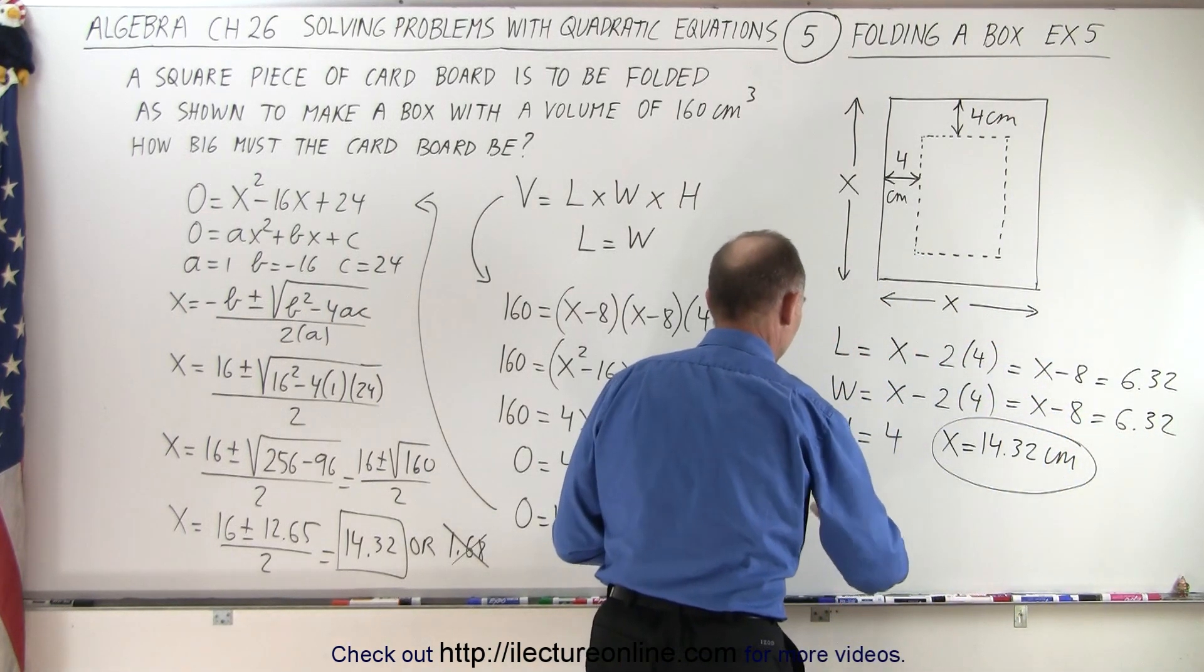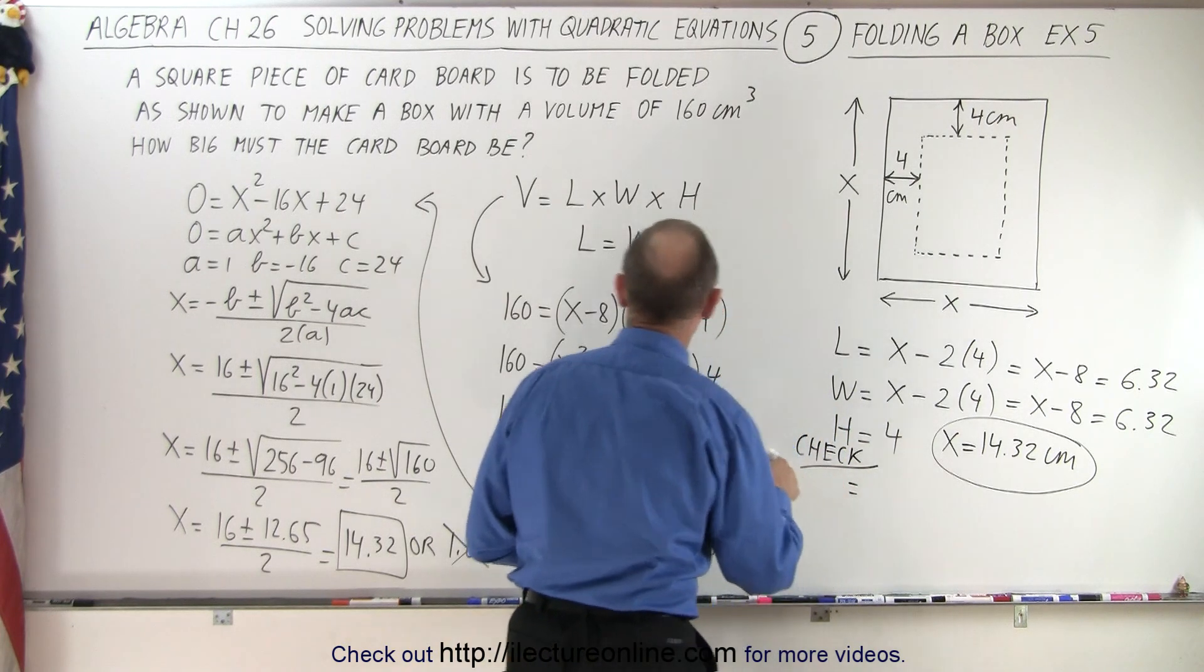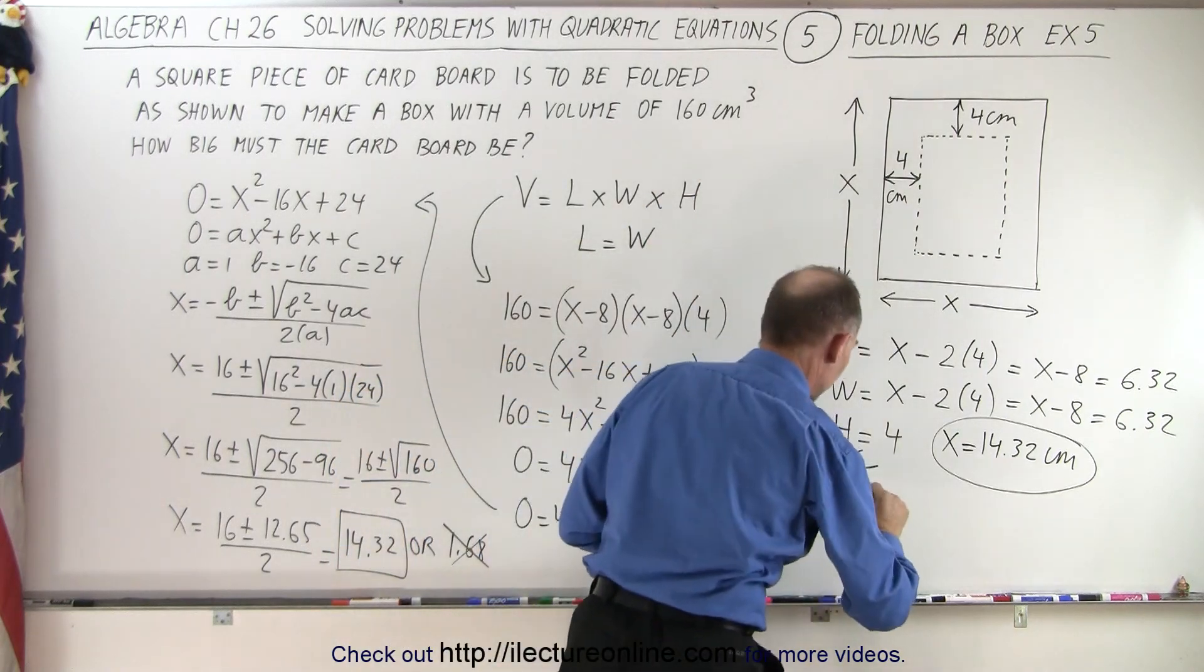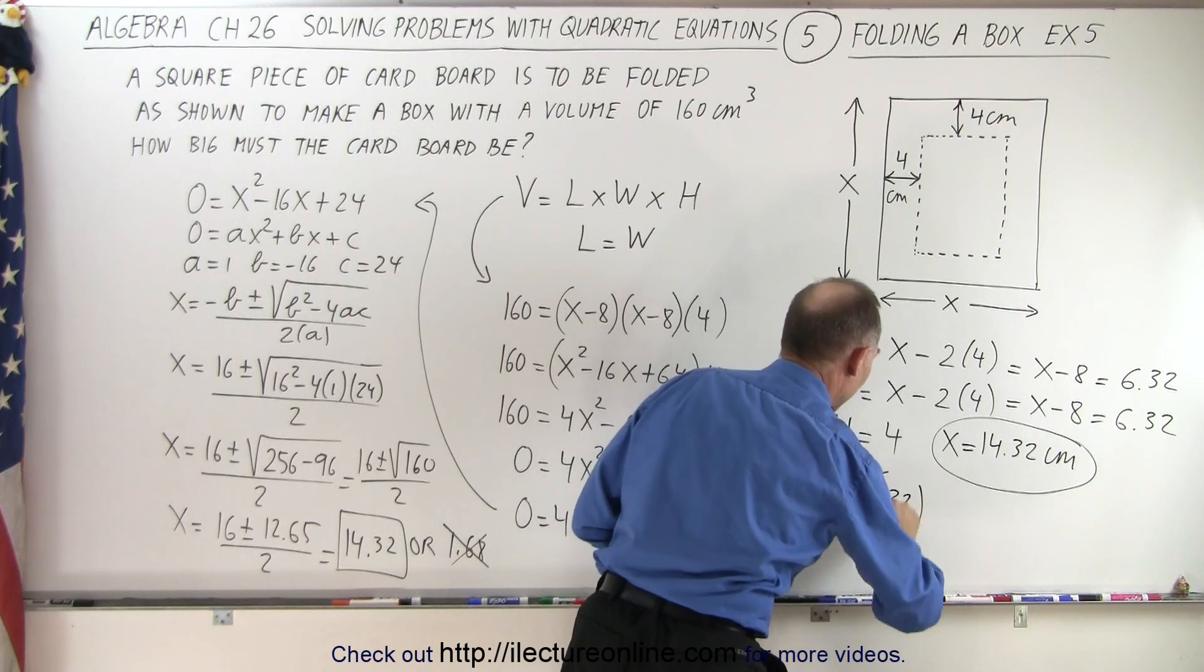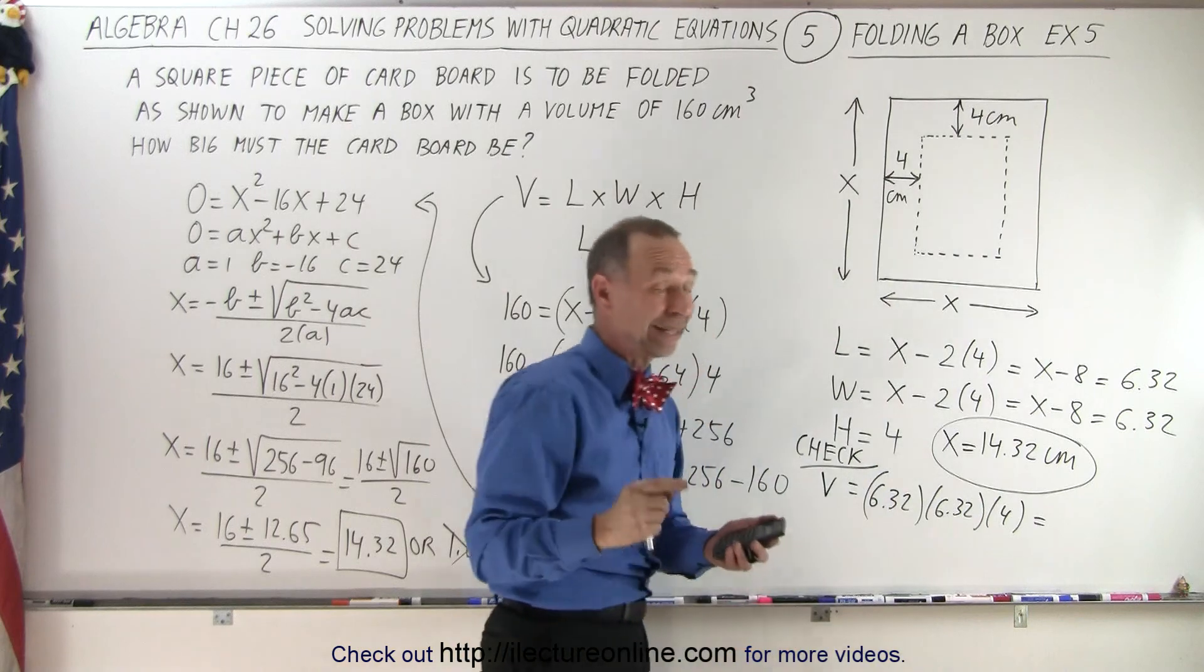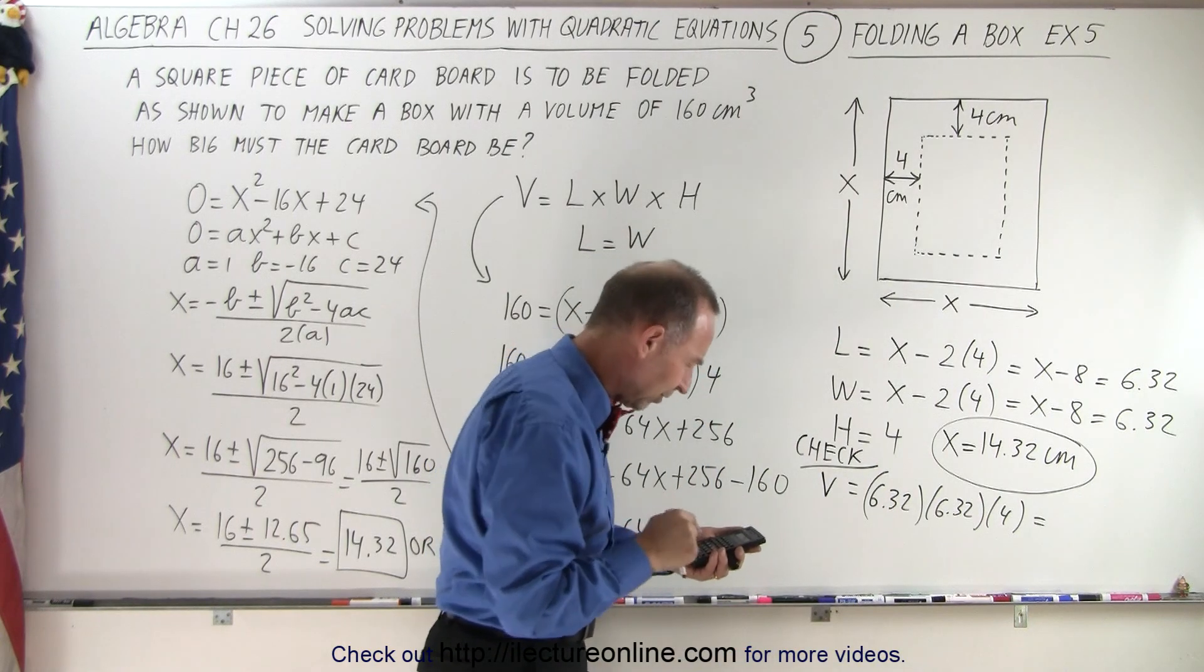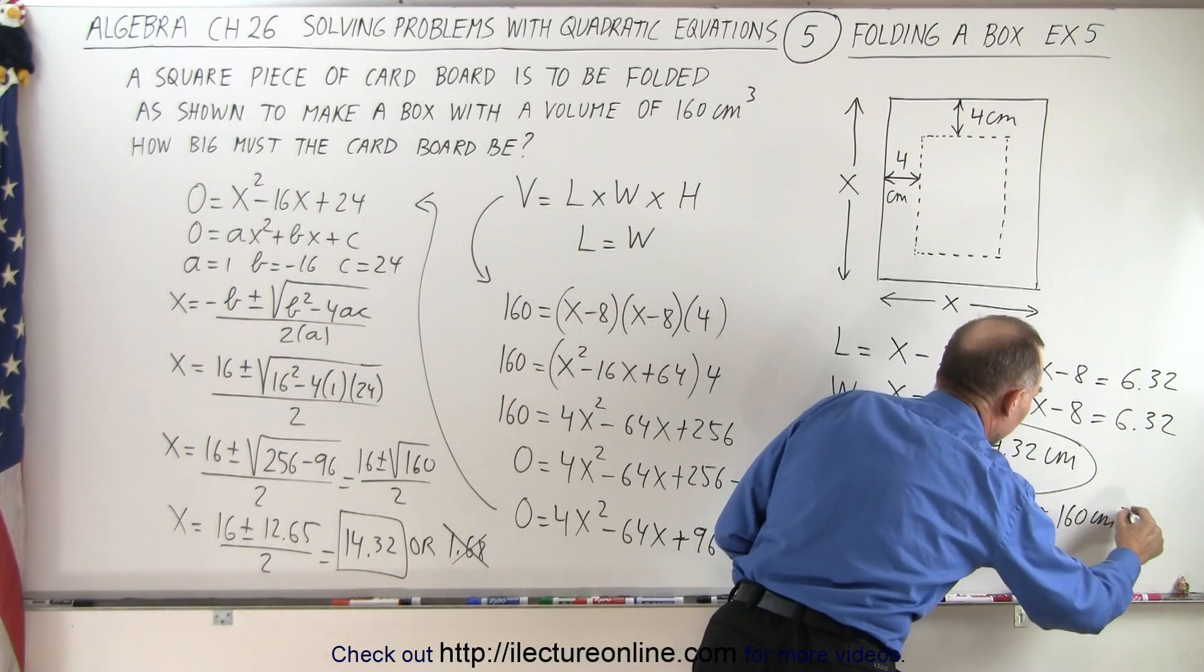So that means that to check, we're going to see if the volume is indeed what we're looking for. The volume is going to be 160 centimeters cubed. So volume equals 6.32 times 6.32 times 4. Let's see if we get the right answer. So we square that times 4 equals, and yes indeed, that's approximately equal to 160 centimeters cubed.